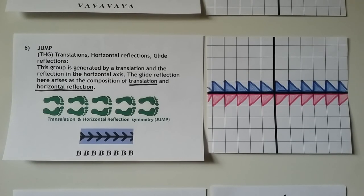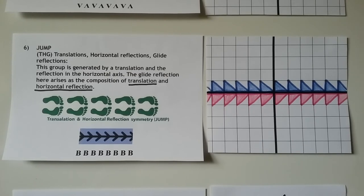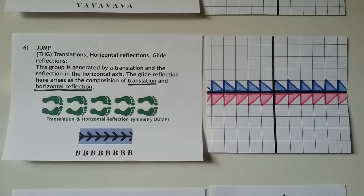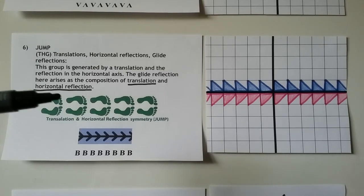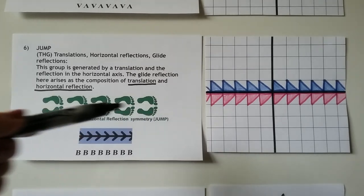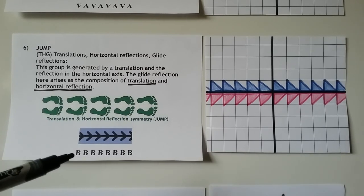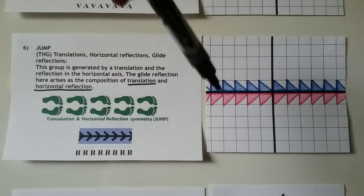Our sixth category of freeze patterns is a jump. We have translations, horizontal reflections, and glide reflections. This group is generated by a translation and the reflection in the horizontal axis, and the glide reflection arises as the composition of a translation and a horizontal reflection. Our line of reflection would be right between the two feet. It would be a pattern like this, or we could do the letter B with our line of reflection right through the center of the uppercase B.